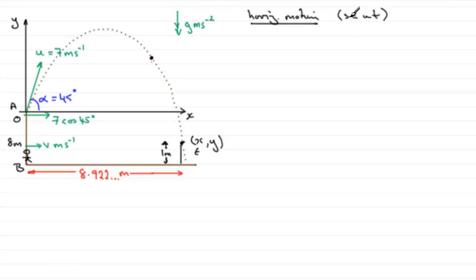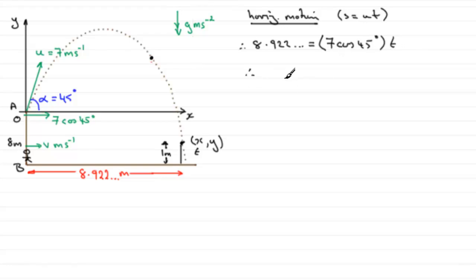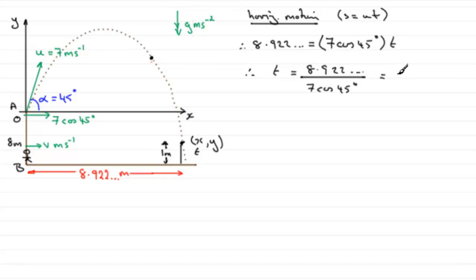S is 8.922 metres, U is 7 cos 45 degrees, and it's multiplied by time T. Dividing both sides by 7 cos 45 degrees, we get T equals 8.922 divided by 7 cos 45 degrees. Working that out, we end up with T equaling 1.8026 seconds.